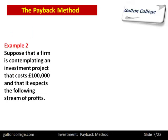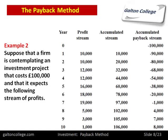Take a different example. Suppose a firm is contemplating an investment project that costs £100,000 and expects the following profit streams: year one £10,000, year two £10,000, year three £12,000, year four £12,000, year five £16,000. The easiest way is to work out the accumulated stream: £10,000 plus £10,000 is £20,000, plus £12,000 is £32,000, plus further amounts reaching £60,000 and so on.